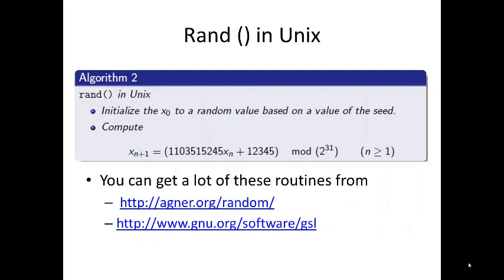Here's rand in Unix and how it works. Initialize x0 to a random number based on the value of the seed. Compute xn plus 1 is equal to